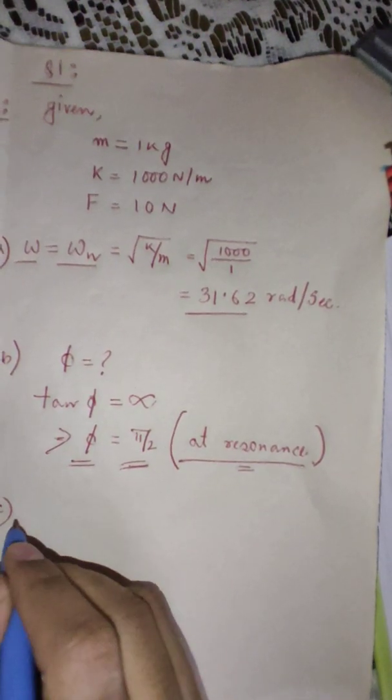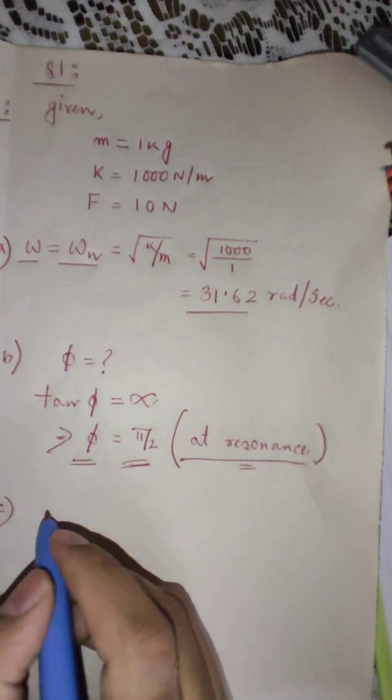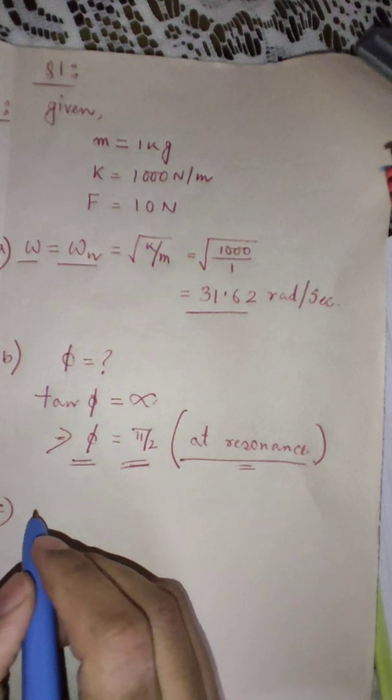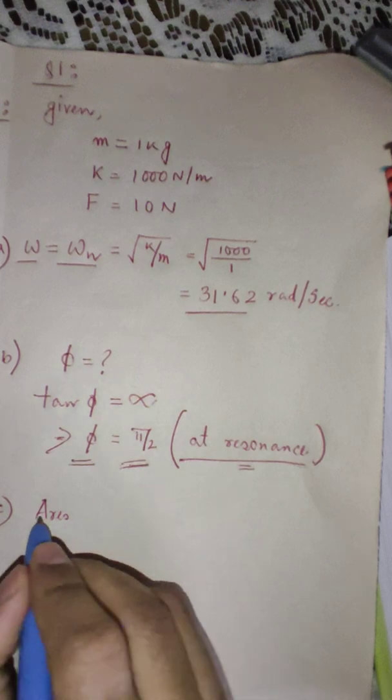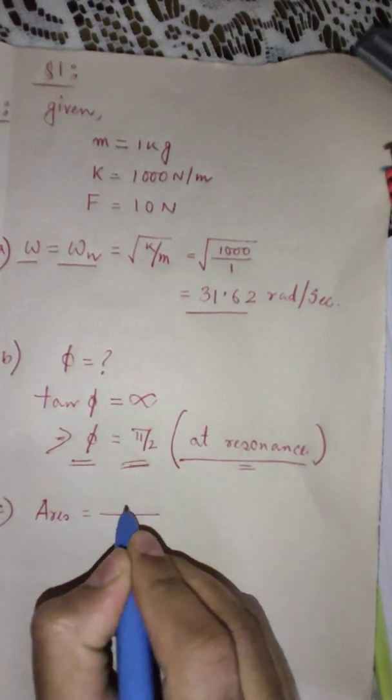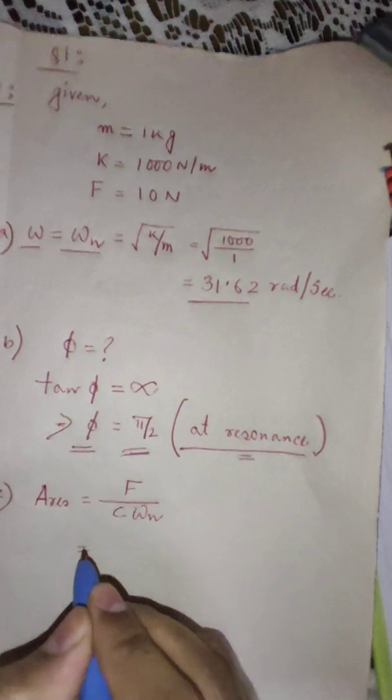Next is the amplitude at resonance. What is the amplitude at resonance? We have already calculated a value. We have a particular formula at resonance. A resonance is equal to F by C omega n.